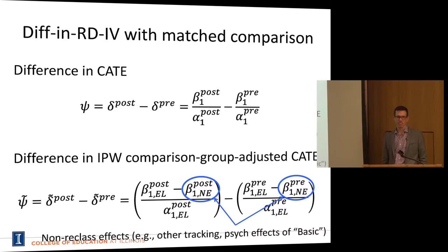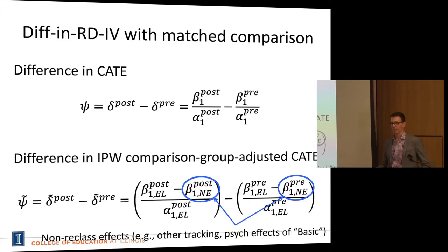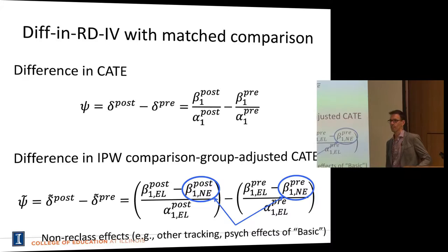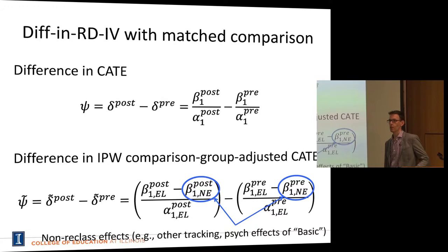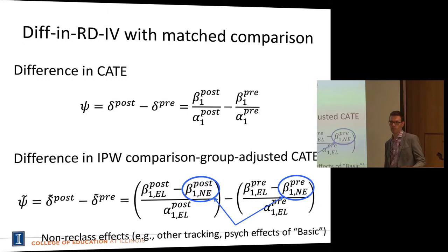After going through the hassle of doing this inverse probability weighting, it didn't really matter — you get basically the same result regardless. The question was raised whether a strict difference in ITTs would just difference out the labeling effect, assuming it's constant across periods. That's one more assumption to make, but if nothing pushed the labeling effect around, they would probably be the same.